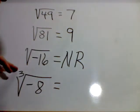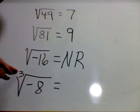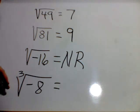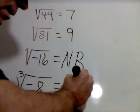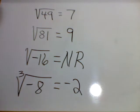However, I can take an odd root of a negative number, because three negatives when multiplied together will give me a negative 8. The number that I can do that with is negative 2. Negative 2 times negative 2 is 4. 4 times negative 2 is negative 8.